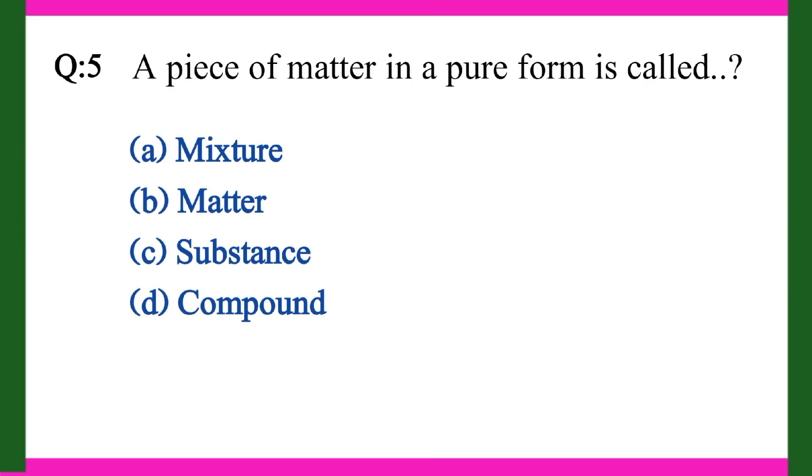Question five: A piece of matter in a pure form is called. A. Mixture, B. Matter, C. Substance, D. Compound. Right answer is C. Substance.